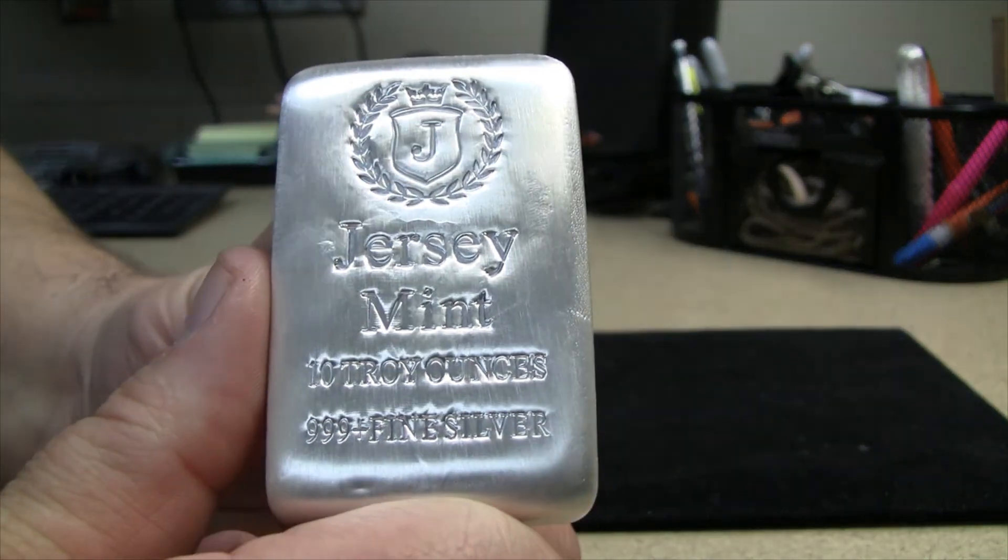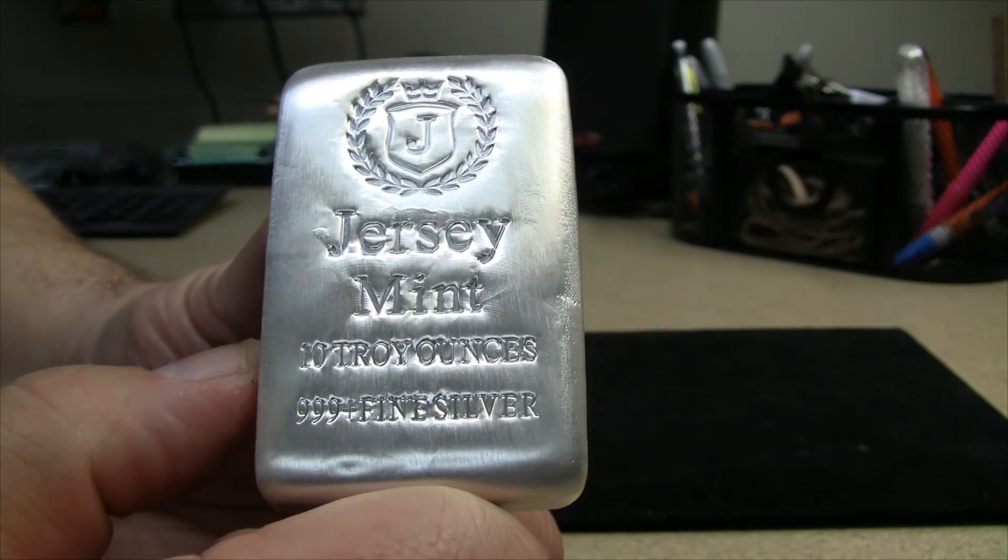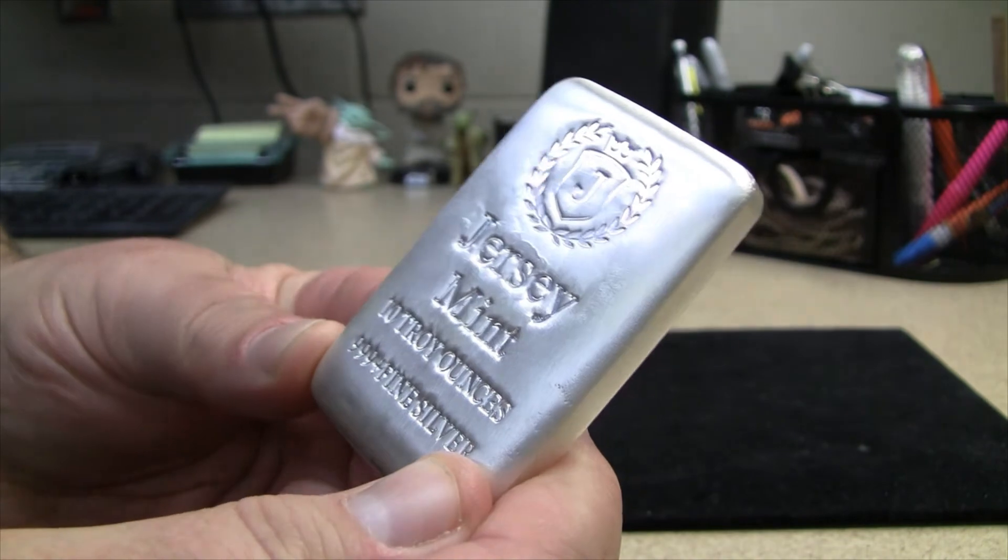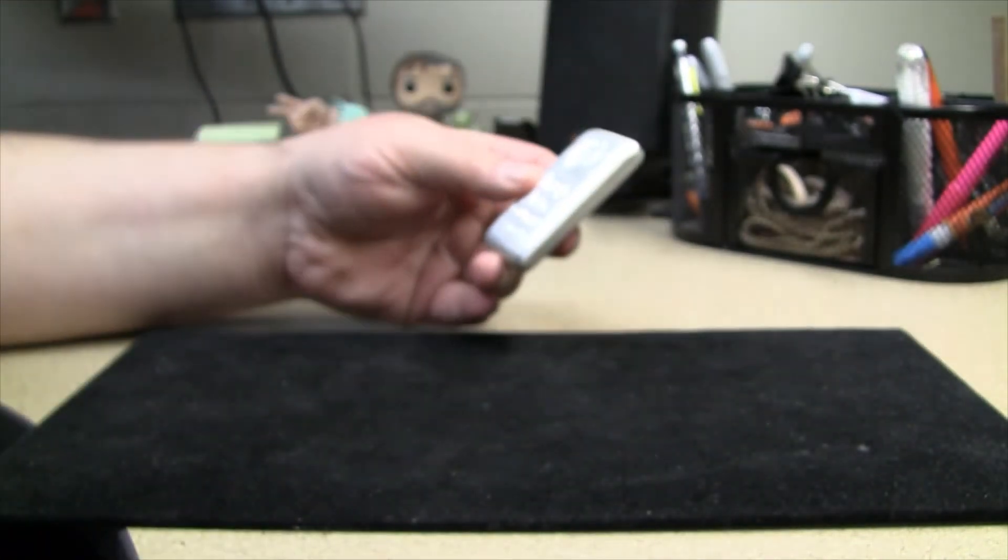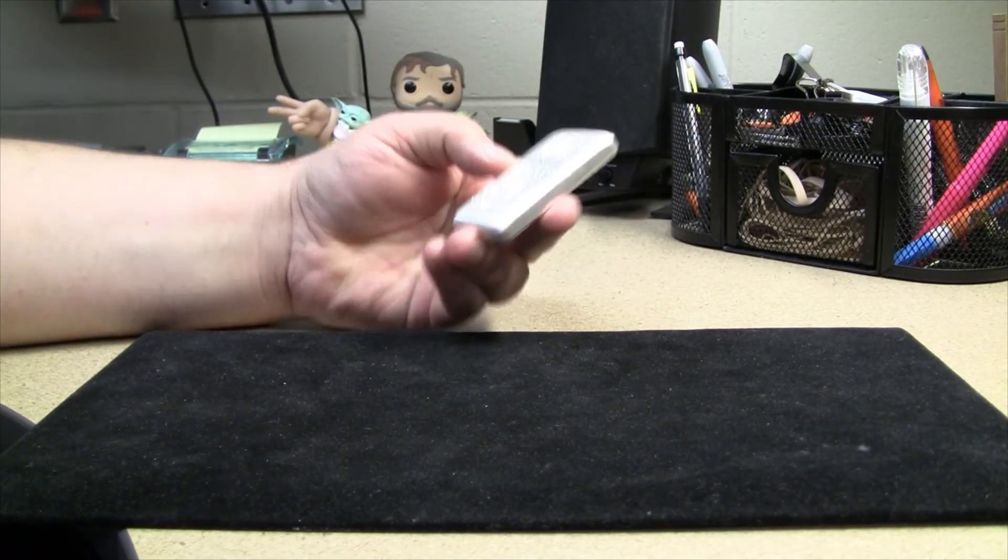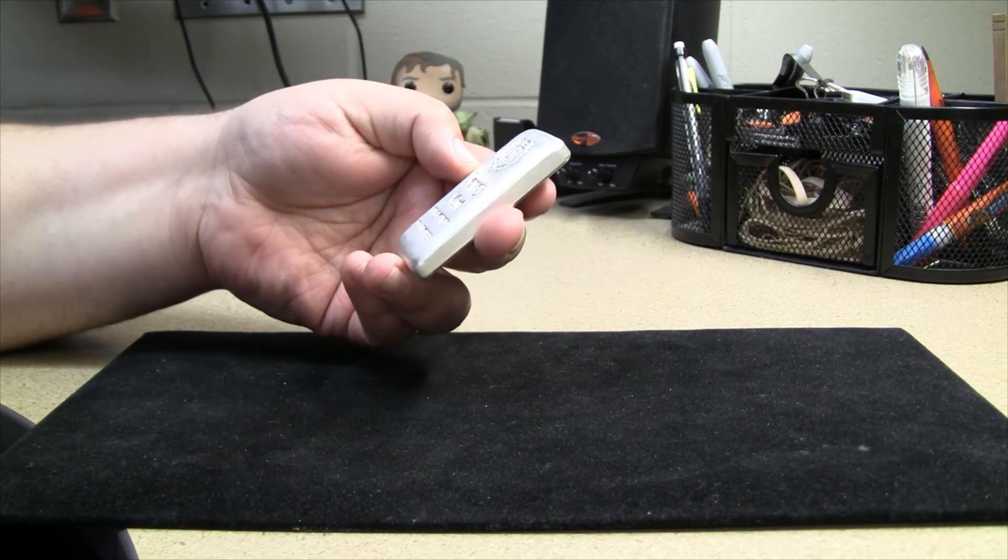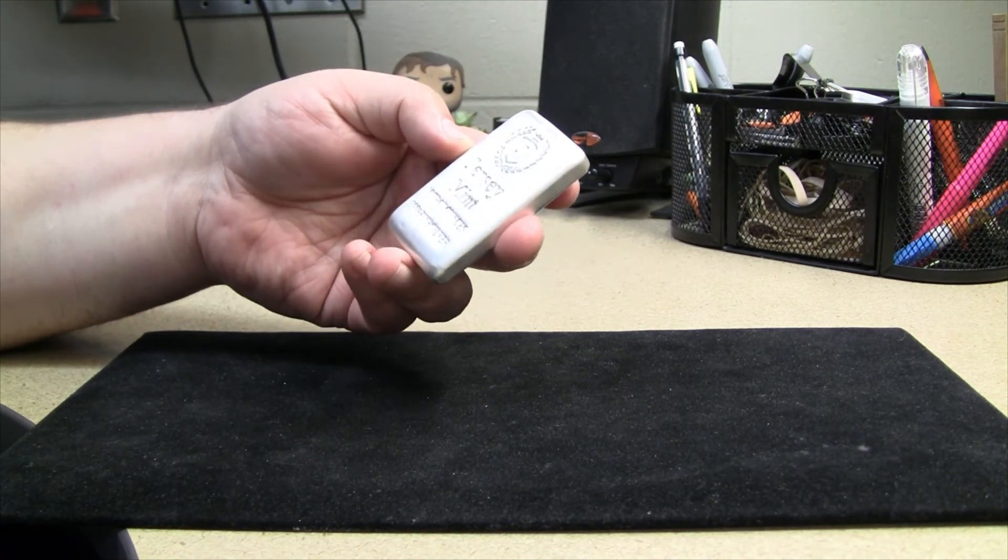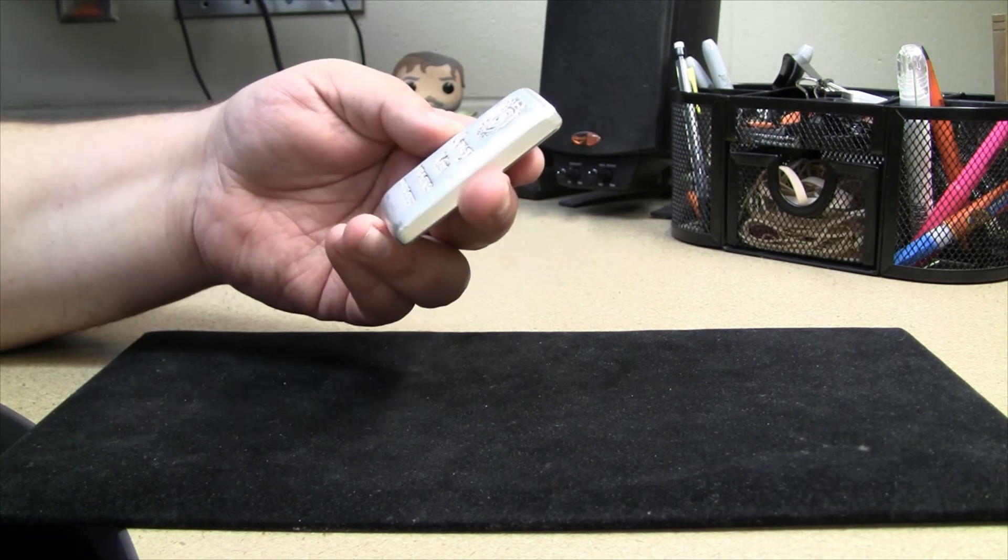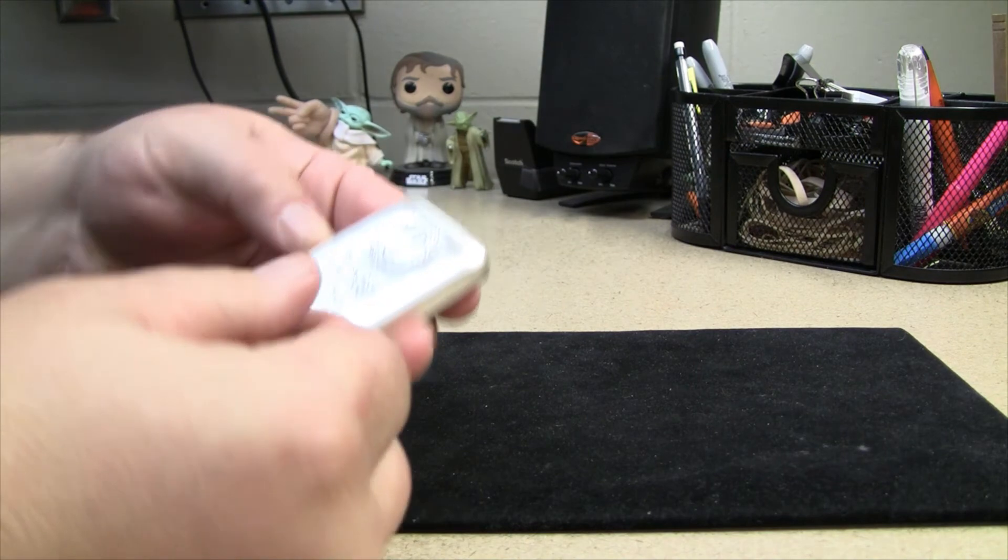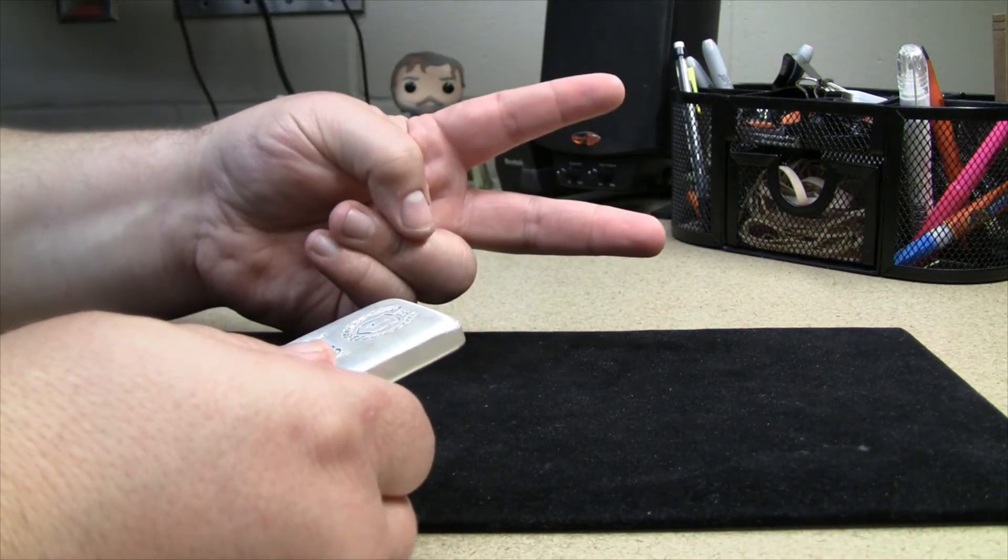So there we go, Jersey Mint 10 troy ounce. I was very happy that even in the midst of a pretty expensive car repair, I was still able to pick up some silver and gold - a way to stack up your wealth with something that is going to retain value through the decades. That's it, that's all I got for today. Thanks for stopping by, I really appreciate you watching. This is Big Stack McGee and I hope you have a great rest of your weekend. We'll talk to you soon.